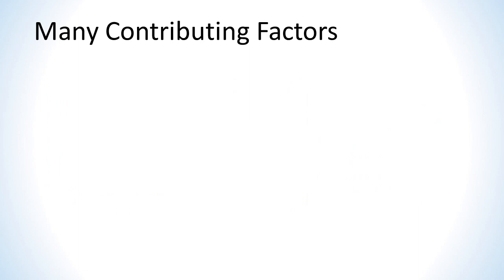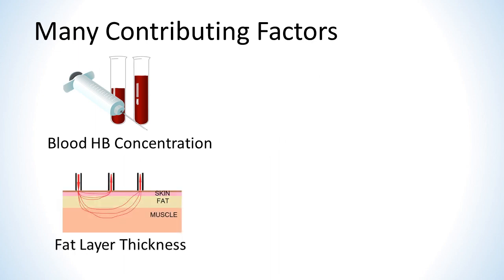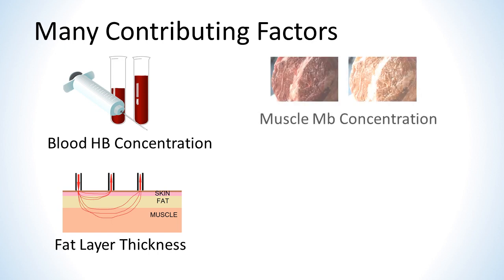Let's look at the four major factors that contribute to the THB reading. First is blood hemoglobin concentration — the higher the concentration, the higher the THB reading. Second is fat layer thickness: fat has a low density of blood vessels and no myoglobin, which is why thicker fat layers make the THB reading lower. Third is the density of myoglobin in the muscle — myoglobin is what makes red meat look red, and higher amounts of myoglobin will make the THB reading higher.